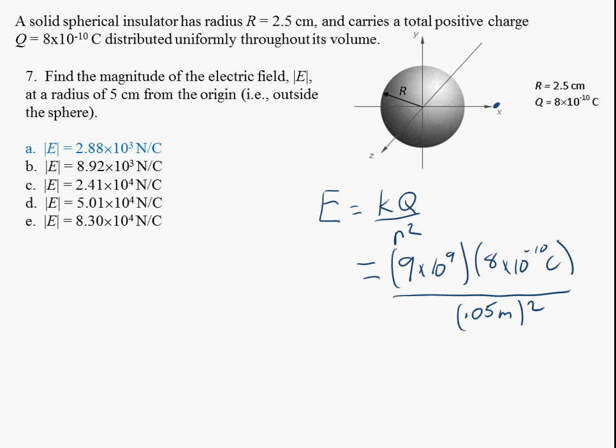If we plug those numbers in, we get the correct answer here of 2.88 times ten to the minus three newtons per Coulomb.